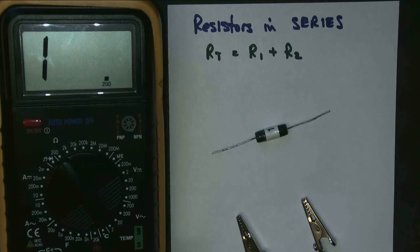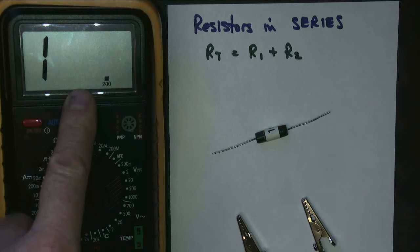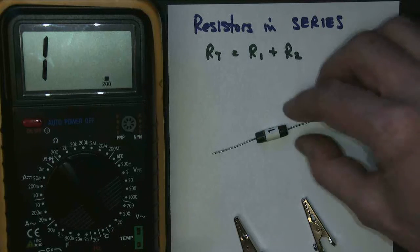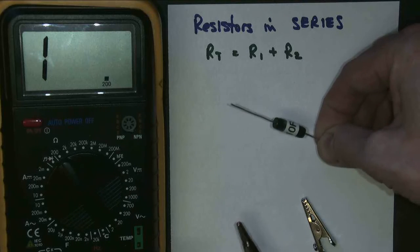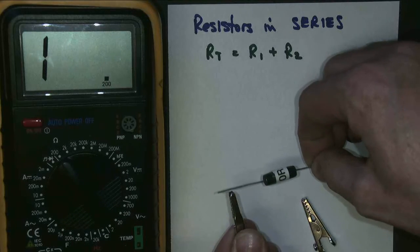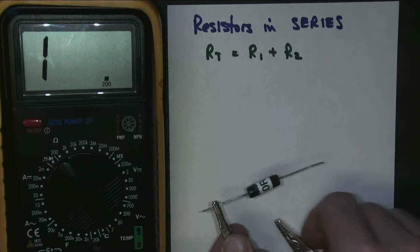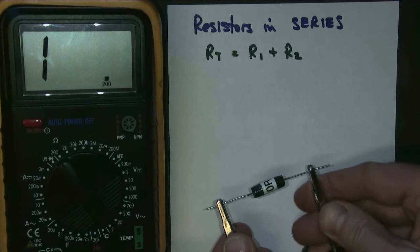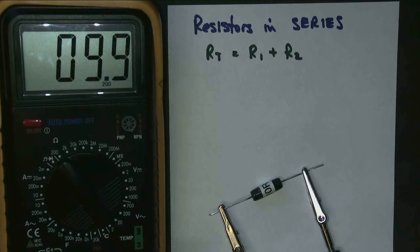Here's a resistor. I'm using big power resistors so you can see them. Here's a multimeter. It's going to measure resistance. It should be, let's have a look, 10 ohms. Let's try and see. And it is indeed fairly close to 10 ohms.